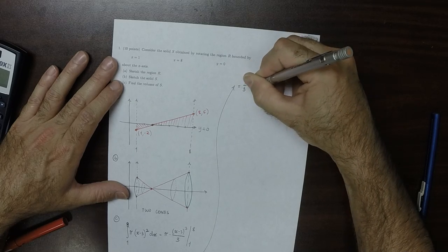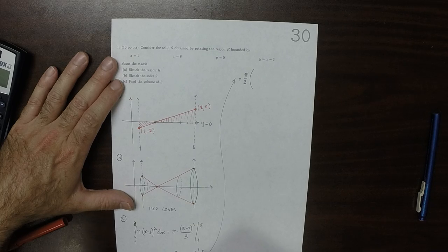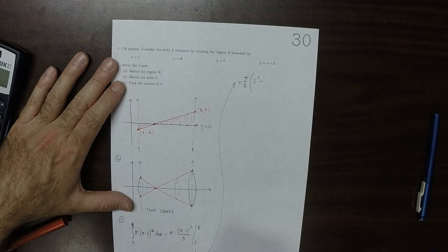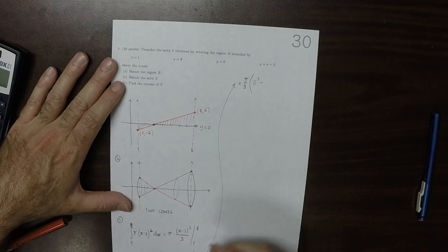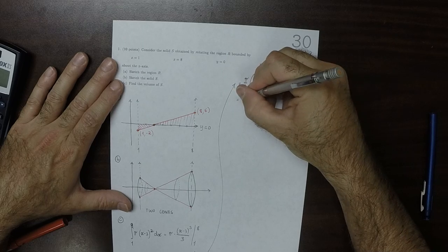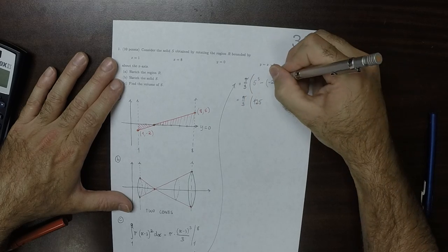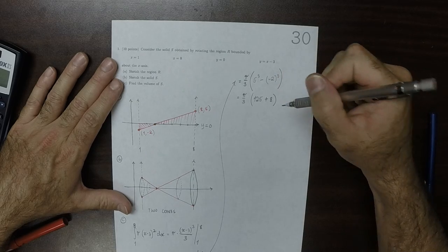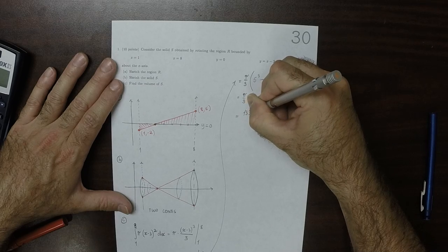So that would be pi over 3. And then at x equals eight, this is eight minus three which is five. So that would be five cubed, and then minus at one. This would be one minus 3 is negative 2, so that would be negative 2 cubed. So that would be pi over 3, and then 125, and then negative 2 cubed is negative 8, so that would be minus negative 8, so that would be plus 8. So 125 plus 8 is 133. So that's 133 pi over 3.